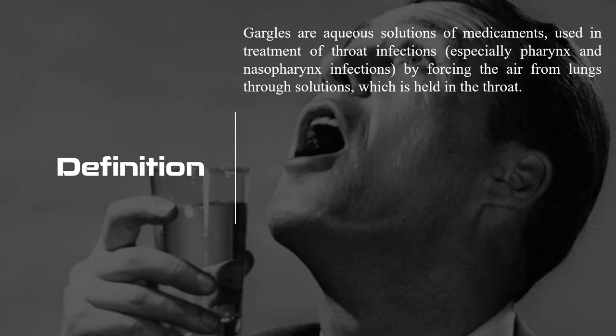What are gargles? These are aqueous solutions. What does it contain? It contains one or more medicaments. What is the purpose of the gargle? It is used to treat throat infections — specifically pharynx and nasopharynx infections. We know about the pharynx; what is the nasopharynx? It is the upper part of the pharynx connecting to the nasal cavity.